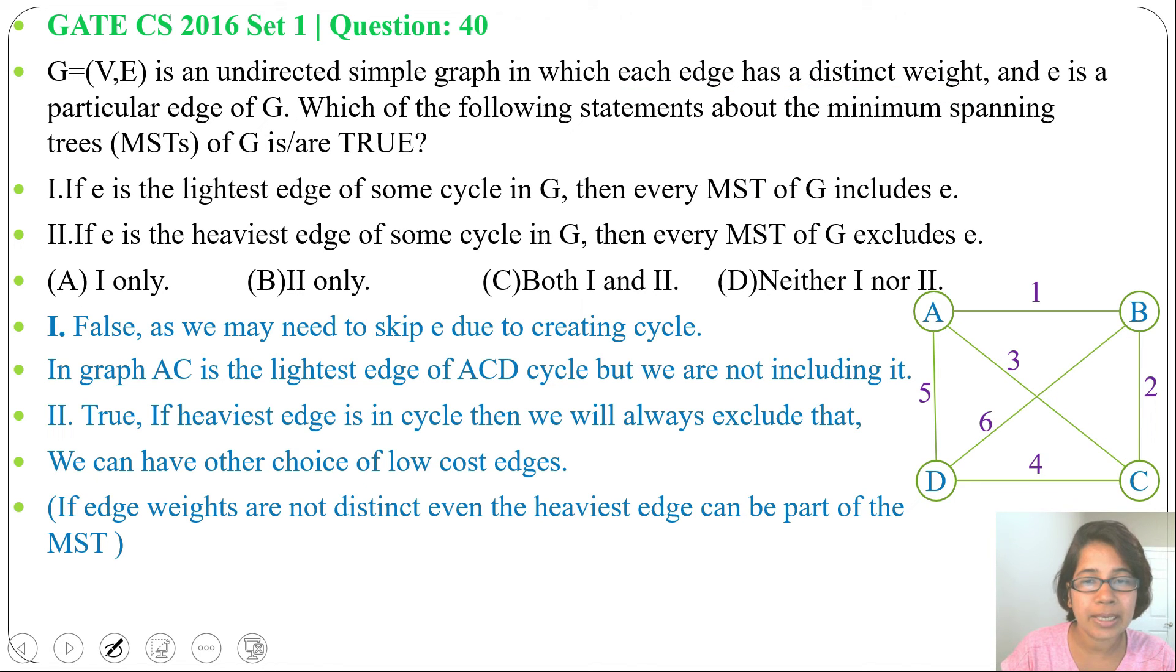So we always exclude the heaviest weight if all weights are distinct. So we found statement 1 is false and statement 2 is true, so answer will be option B. It's not necessary that we will always include the lightest weight of the cycle and we will exclude the heaviest weight of the cycle every time if all weights are distinct.